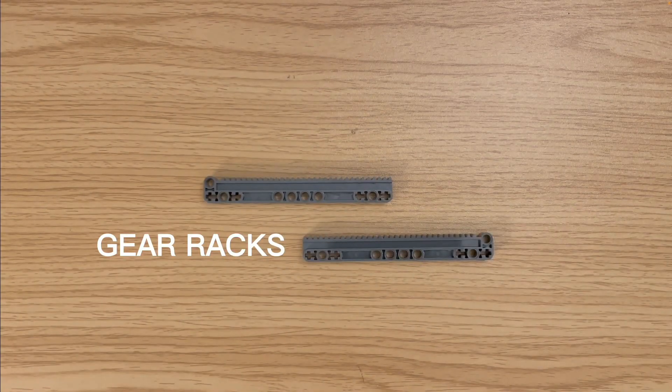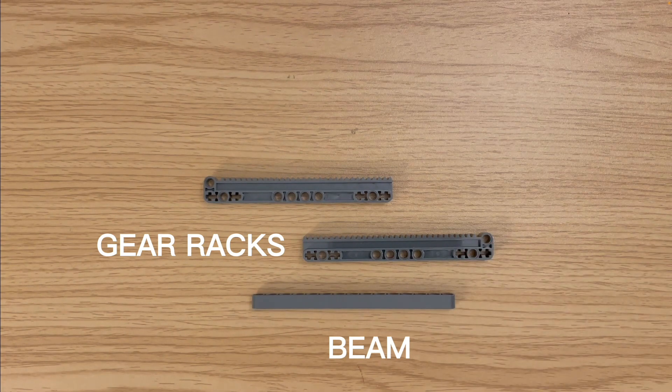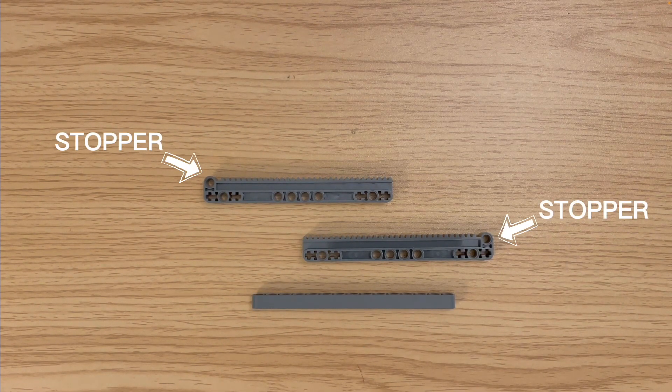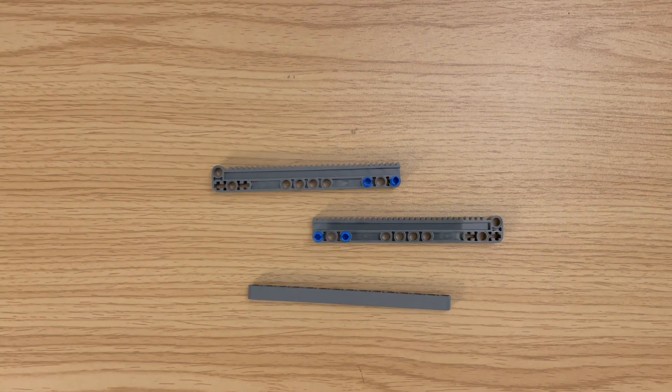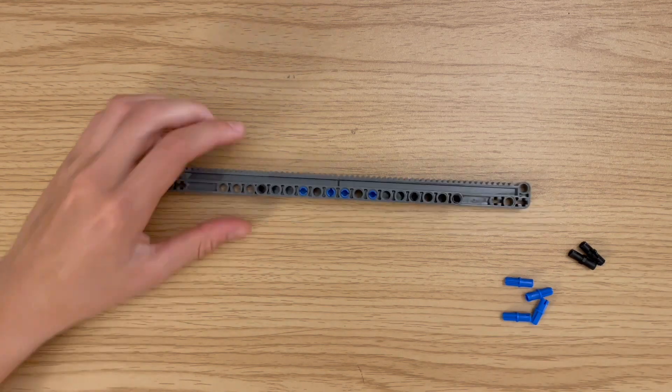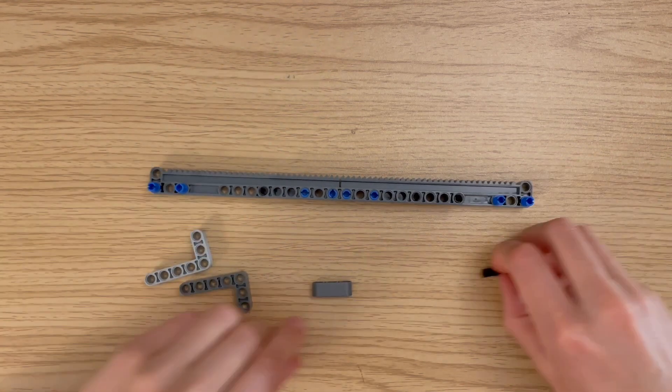This second example of a linear actuator can almost double the range of motion. To build it, I used two gear racks and connected them together with a beam on the side. If you look closely at the gear rack, you can see that one end has a stopper that stops the gear. You want to connect the two ends without a stopper together so that you will end up with stoppers on both ends of the combined gear rack.